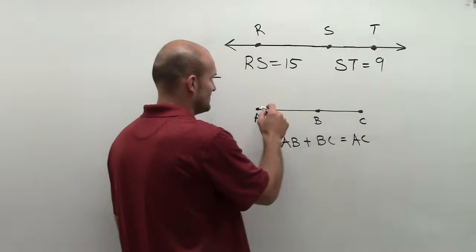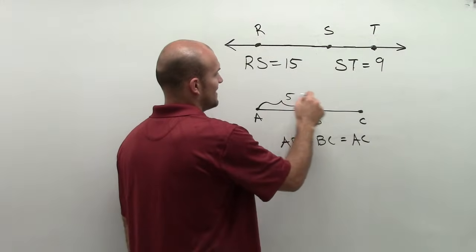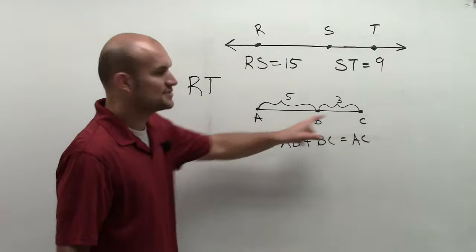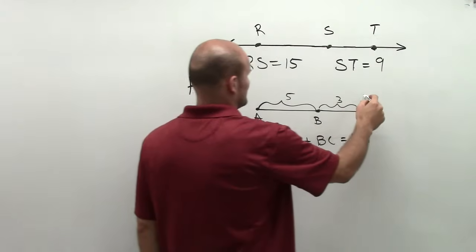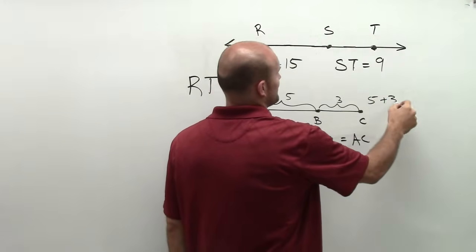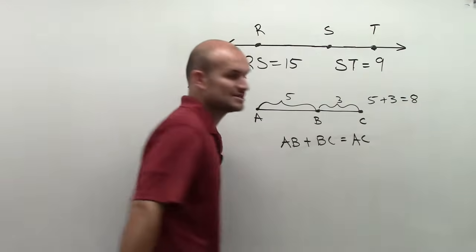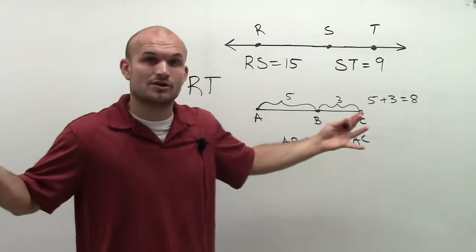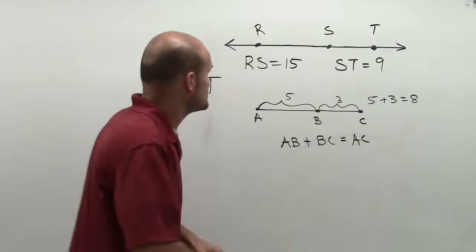Which makes sense. If I said this length is 5 and this length is 3, then what is the total length? And you'd say, oh well, that's pretty easy. 5 plus 3 equals 8, right? It's going to be the addition of the two segments is going to give you the total length.